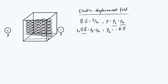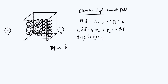Since we have the divergence of a vector field on both sides, we can move the polarization term over and combine them: the divergence of (ε₀E + P) equals the free charge density. So we define a new vector field — the displacement field D — as the quantity we're taking the divergence of: D = ε₀E + P. The reason this is useful is that the divergence of D then equals just the free charge density ρ_f.